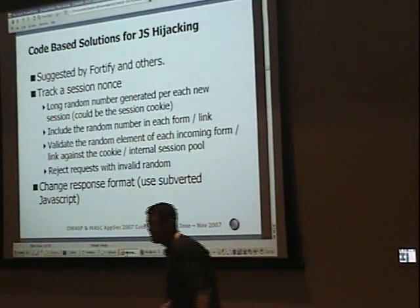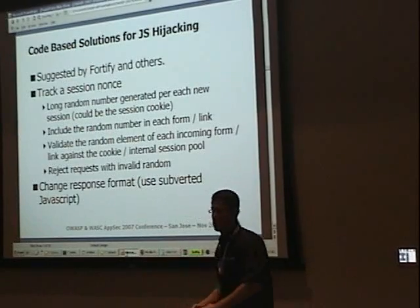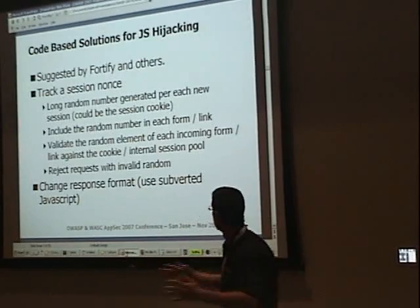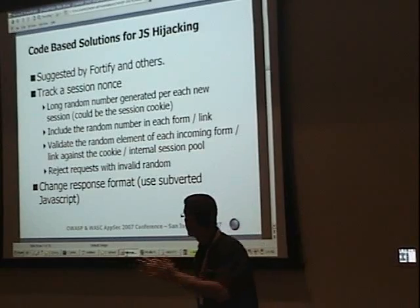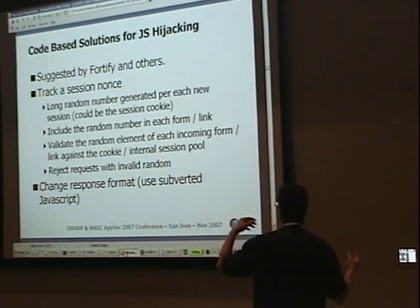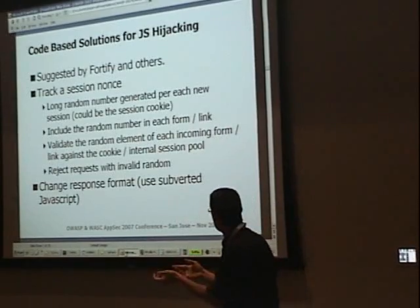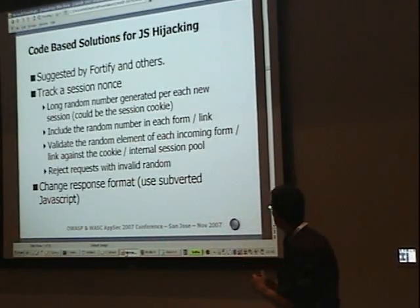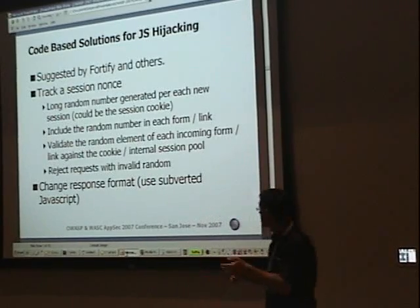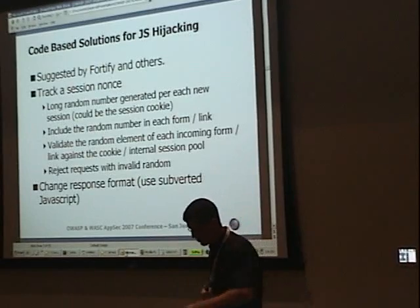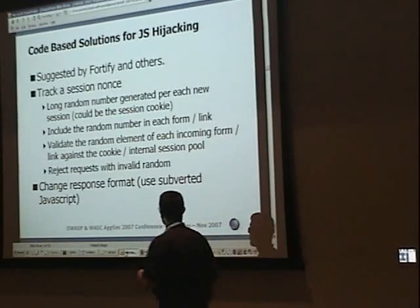So what are we going to do against it? Very simple — we just heard the solution: you need a session random token. You generate a random session token for each new session, you include this random number in each form or link, and then validate that random number for each incoming request against your session dictionary. And of course, you reject requests with an invalid random token.